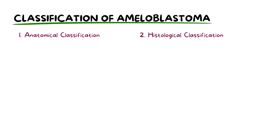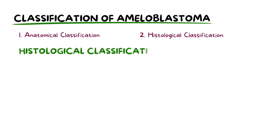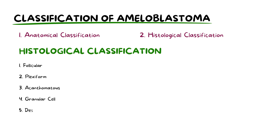In addition to the anatomical classification, there is also the histological classification, which has six types. These include the follicular type, plexiform, acanthematous, granular cell, desmoplastic, and basal cell.